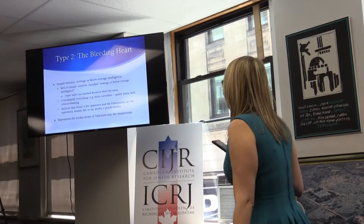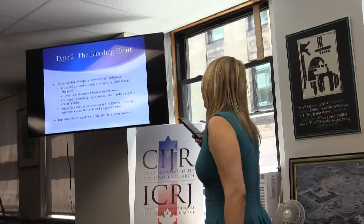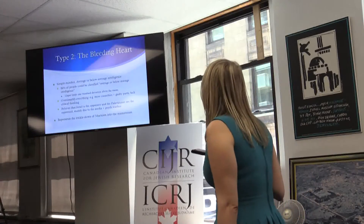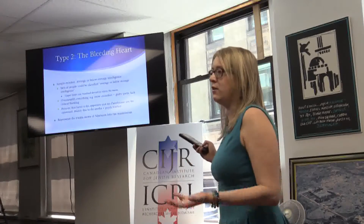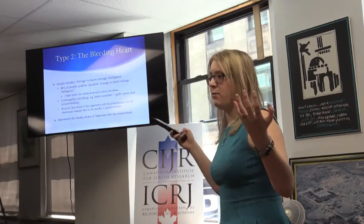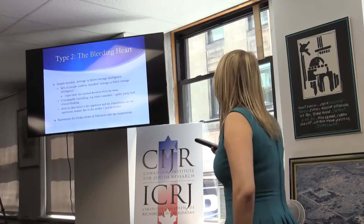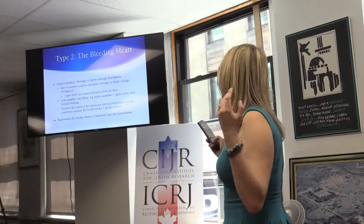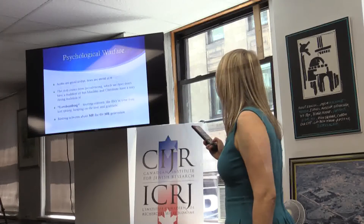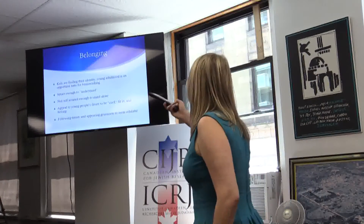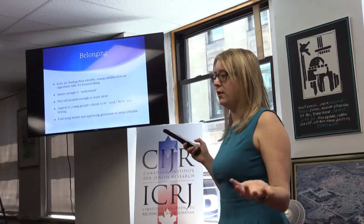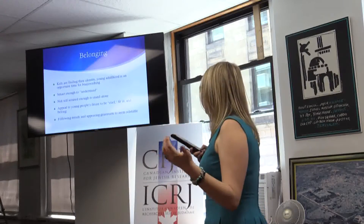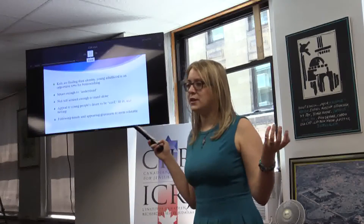Type Two — the bleeding heart. Simple-minded, average or below-average intelligence. 84% of people can be classified as average or below-average. They oversimplify everything because they can't understand complex ideas — more casualties means the guilty party. They believe Israel is the oppressor and Palestinians are the oppressed, mainly due to media and psychological warfare. This represents the trickle-down of Marxism into mainstream society. Also adolescent psychology: these students are young adults, smart enough to understand but not self-assured enough to stand alone. You need to appeal to their desire to be cool, fit in, belong, follow trends, and appear grassroots. You have to seem relatable.